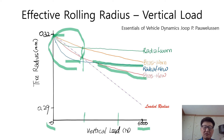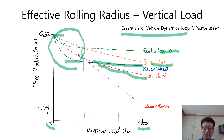The worn tire has a bigger effective rolling radius compared with the new one because of lower stiffness. You can find more details in the reference book, Essentials of Vehicle Dynamics, written by Poehler-Sund.